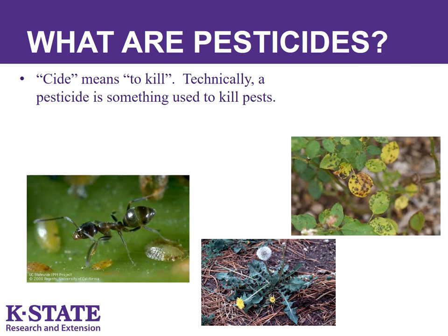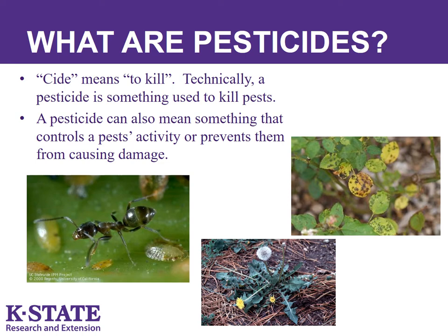The 'cide' portion of pesticides literally means to kill. Therefore, a pesticide is something used to kill pests. However, the working definition of pesticide can also mean something that controls a pest's activity or prevents them from causing damage. For example, DEET in mosquito repellents is considered a pesticide even though it does not kill mosquitoes, but rather repels them.